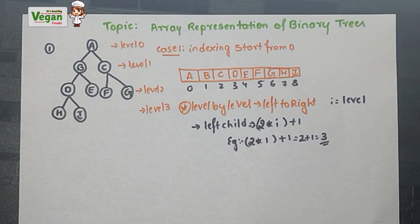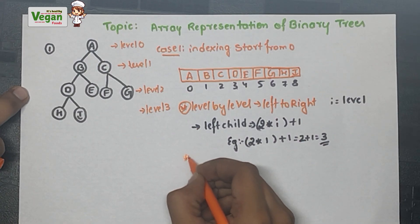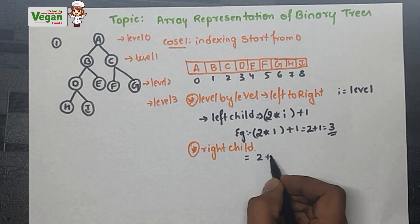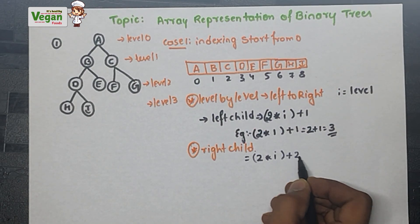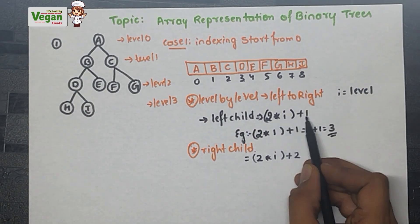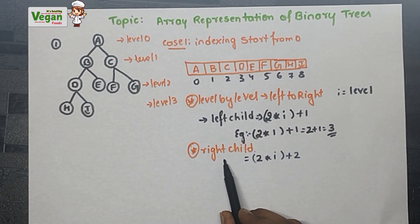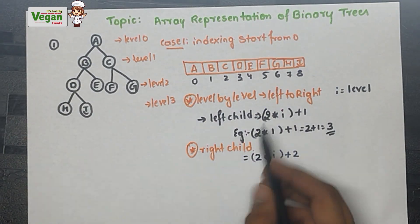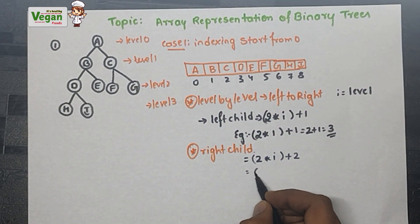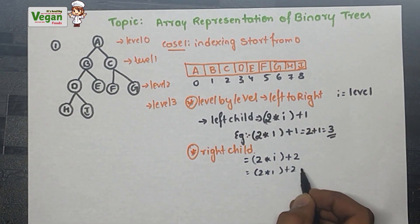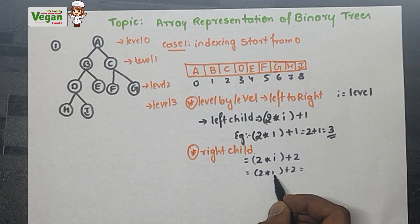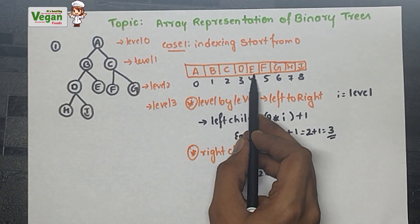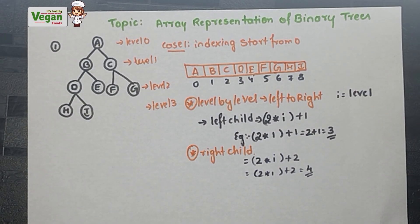To find the right child, the formula is 2*i + 2. So for the right child of B: 2*1 + 2 = 4. The value at index 4 is E, and the right child of B is also E. Satisfied.